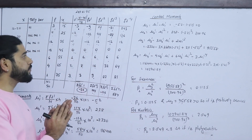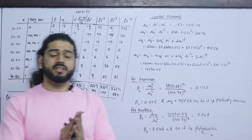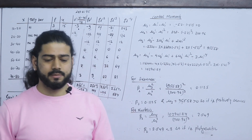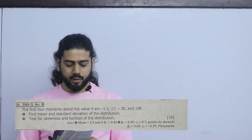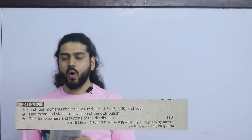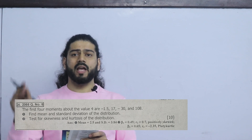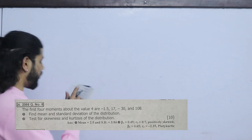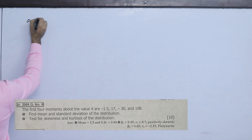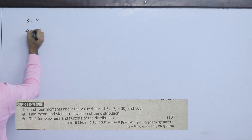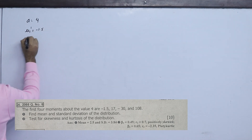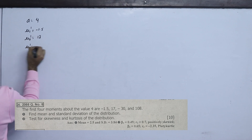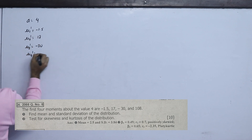There is another question. If you have already known the raw moments, how can you solve it? The first 4 moments about the value of 4R (about an arbitrary point) are: μ1' = −1.5, μ2' = 17, μ3' = −30, μ4' = 108. These are the raw moments.